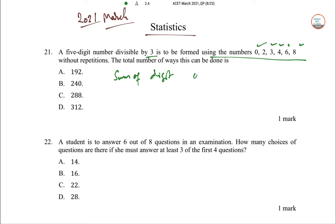So yahan per istamal karhenge 0, 3, 4, 6, 8. So number of 5 digit that can be formed by using 0, 2, 3, 4, 6 total kita hai 4, 4 into factorial 4.